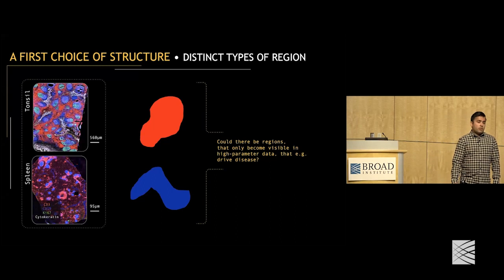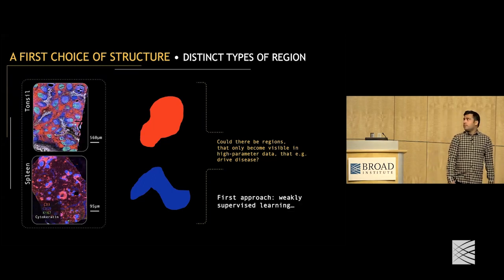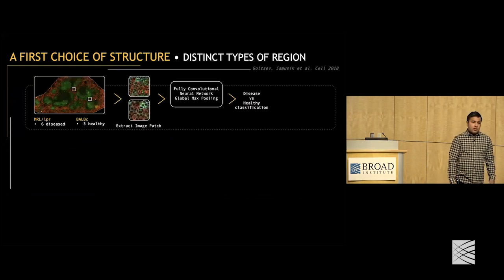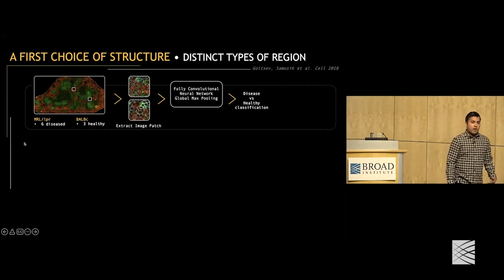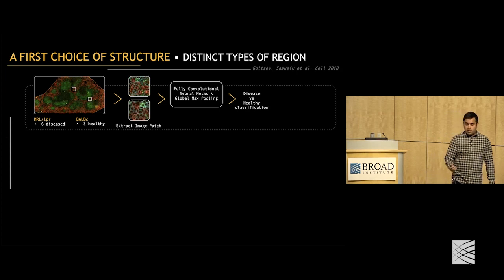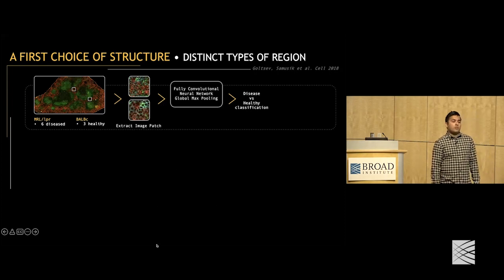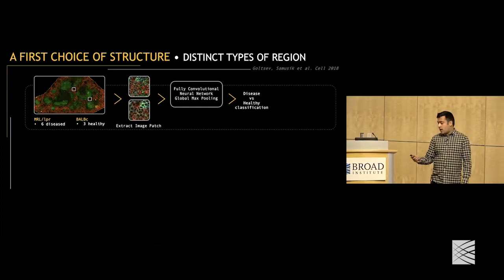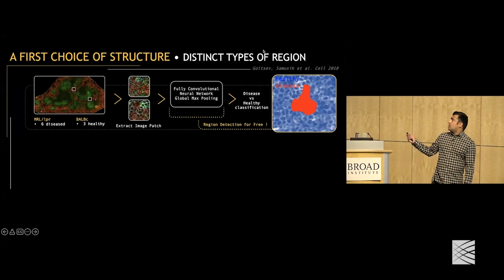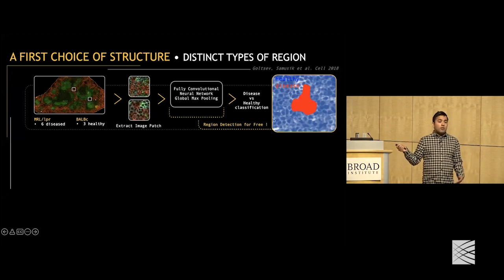A first approach we took was using weakly supervised learning. We had healthy and disease mouse spleens imaged with high-parameter CODEX imaging — 30 different antibody parameters. We extracted image patches and used a fully convolutional network with a global max pooling operation to obtain the disease versus healthy classification. An intermediate output is images where different parts of the tissue are labeled to the extent to which they correspond to the healthy and diseased states.